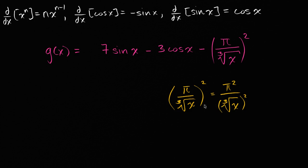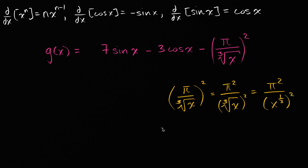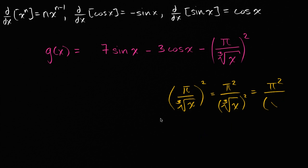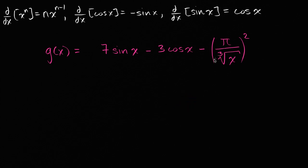This is just exponent properties. We're going to take x to the 1/3 power and then raise that to the 2nd power. So this is equal to pi squared over x to the 1/3 squared, which is the same thing as pi squared over x to the 2/3 power, which is the same thing as pi squared times x to the negative 2/3 power. When you write it like this, you can see how the power rule could apply. So this thing can be rewritten as pi squared times x to the negative 2/3 power.